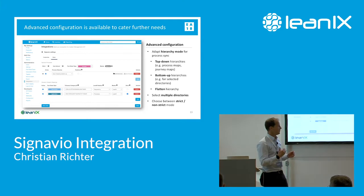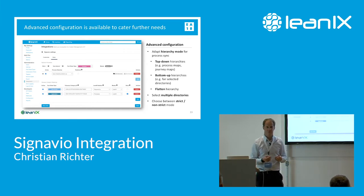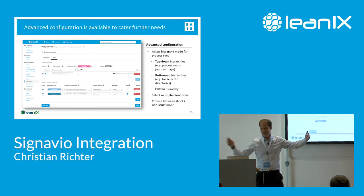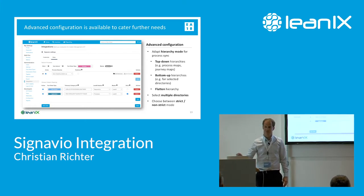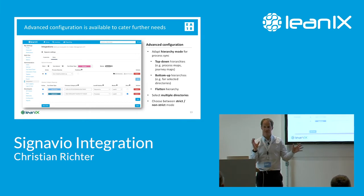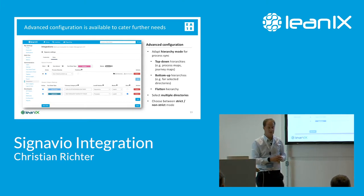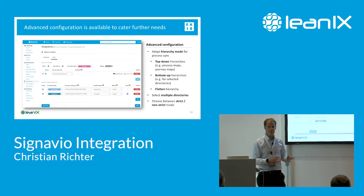A different scenario is bottom-up: you have different entities without a central entry point, and you only want to capture their individual process maps and put them under a certain fact sheet in LeanIX. A third option is when you have a project running, sketch some processes, and want them in LeanIX but don't care about hierarchy — so you flatten it. These are the ways to deal with linkage of processes from Signavio.